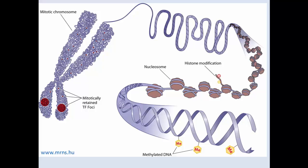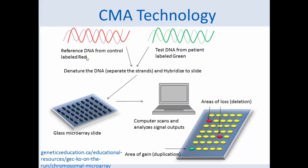So you start out with one base pair at the lower right-hand corner, and in a chromosome you have 100 million base pairs. The region that CMA technology is looking at is anywhere from 30,000 to 3 million base pairs. CMA has a reference DNA from a control — a pretty standard, well-studied reference DNA.